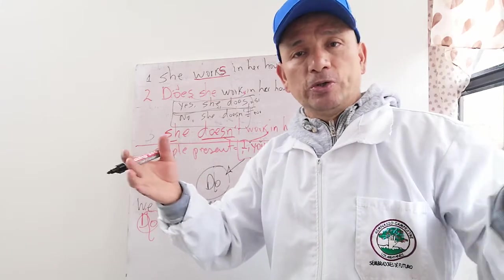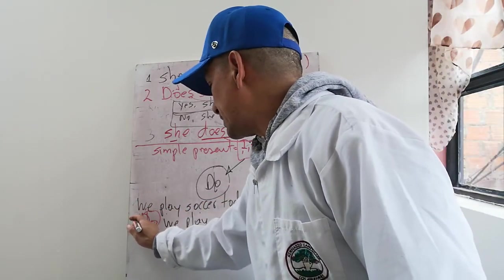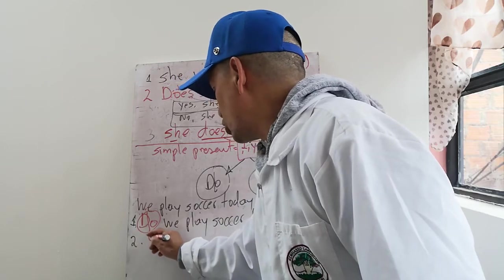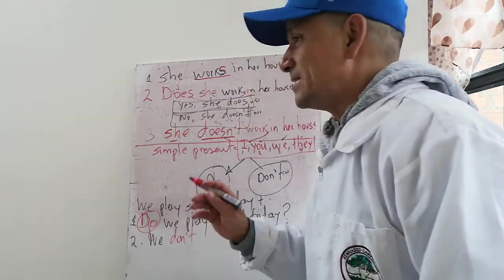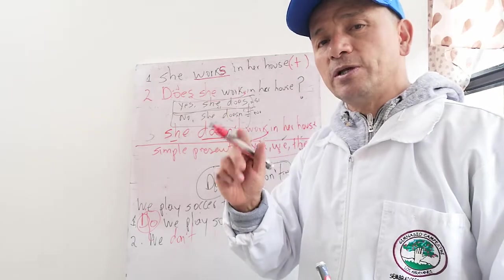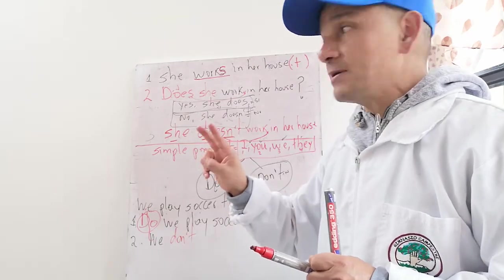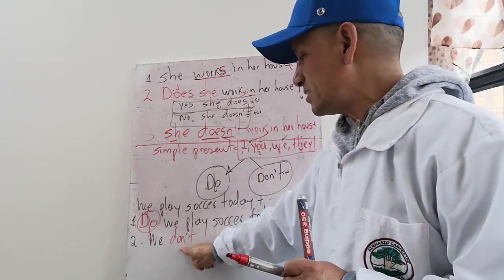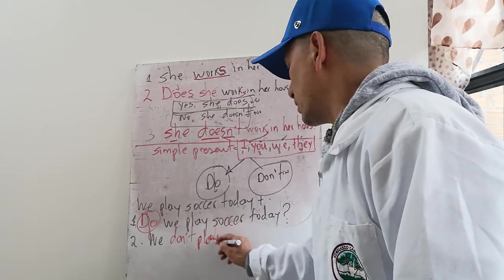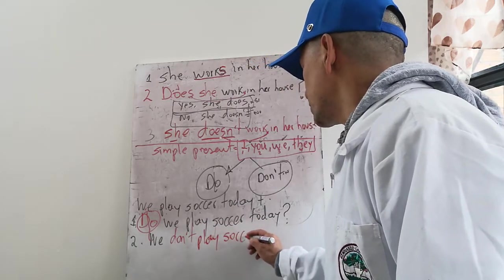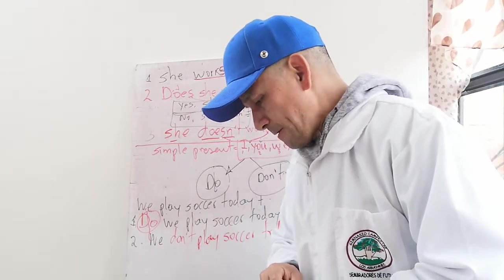Y la negación, básicamente nosotros, we, y para decir no pues utilizamos la palabra DON'T. Quiere decir que la palabra en inglés NO se utiliza, le hacen dos palabras: DOESN'T o la palabra DON'T. Tienen que saber manejar cuál, DOESN'T para terceras personas y DON'T para presente simple. We don't play soccer, we don't play soccer today, hoy no jugamos fútbol.